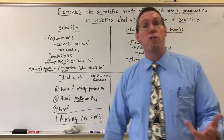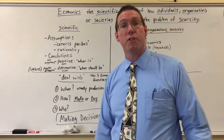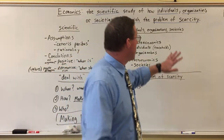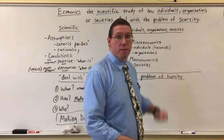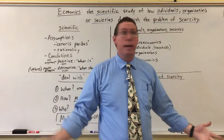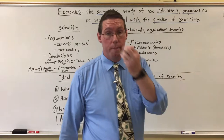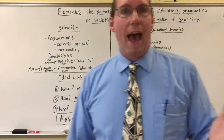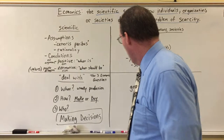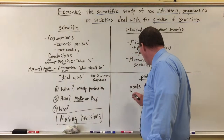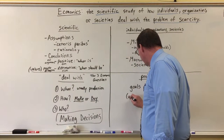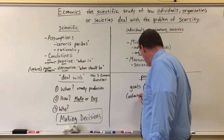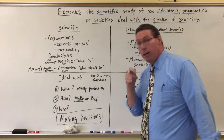You have goals — things you want to accomplish, things that you want, things that you think you need. Businesses have things that they want or need. Society has things that they want or need. And those goals have no limit at all, so our goals are unlimited. The goals that you have for your life are unlimited.